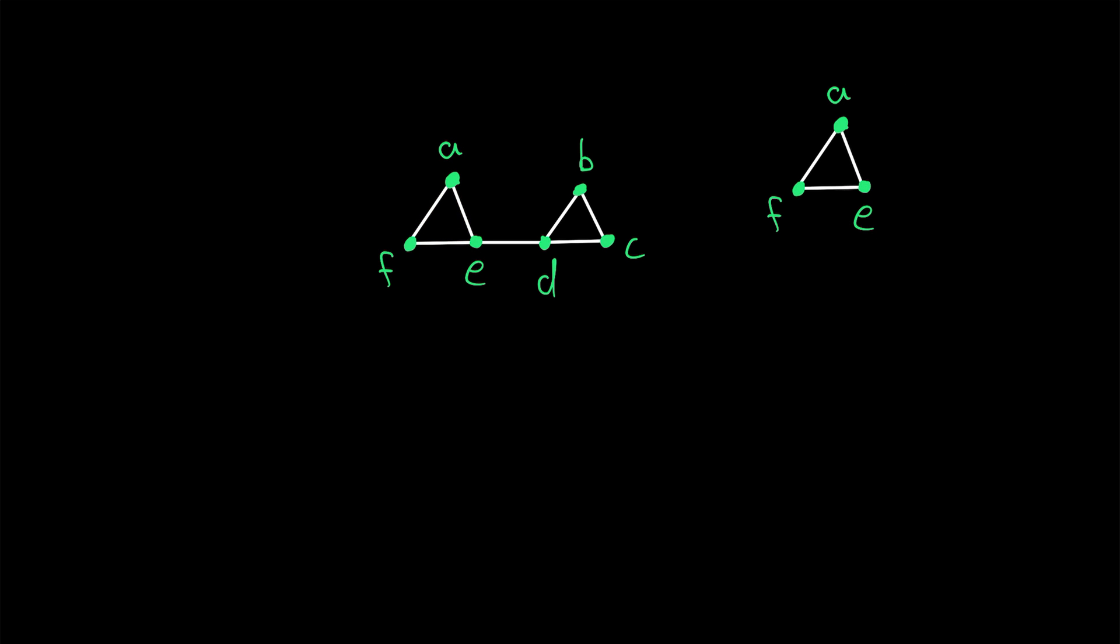Then is this vertex E adjacent to every other vertex in the clique? Indeed it is. It's adjacent to F. Thus, this clique is not maximal, because we could extend it by including the vertex E. Then what about this clique? Is this clique maximal? We can easily determine that it is.